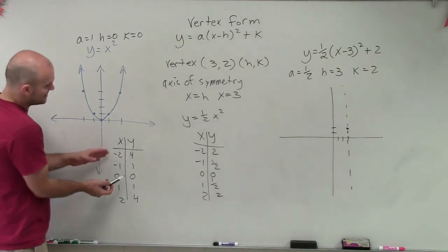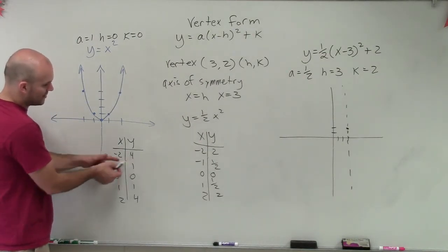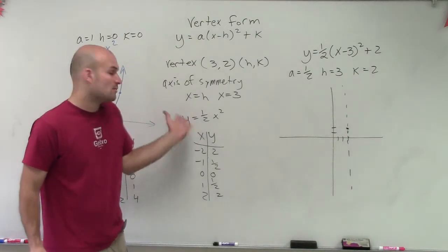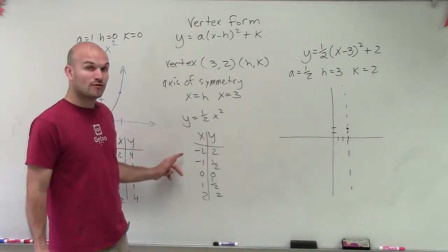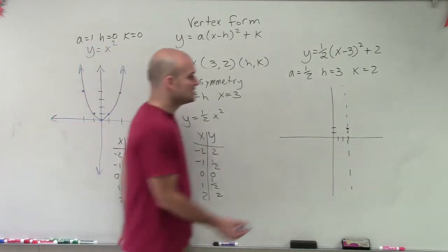So what I want you to understand is these points: if I go negative 1, I go up 1. Negative 2, I go up 4. But now, since I'm multiplying by 1/2, I'm going to go left 1, up 1/2, over 2, up 2.